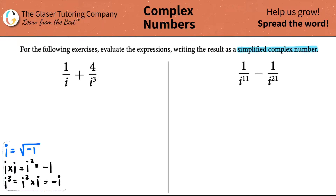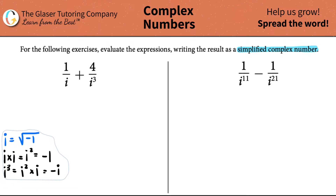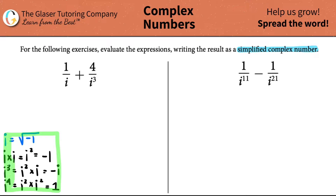And i to the fourth would be i squared times i squared — negative one times itself is positive one. So just know this schematic. We're going to use that to simplify our fractions and get down to a simplified complex number.